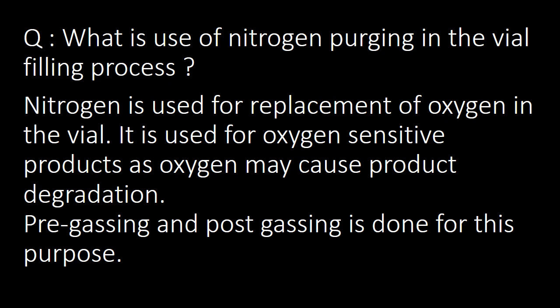Next important question: what is the use of nitrogen purging in the vial filling process? Nitrogen is used for replacement of oxygen in the vial. It is used for oxygen-sensitive products, as oxygen may cause product degradation. Pre-gassing and post-gassing are done for this purpose.